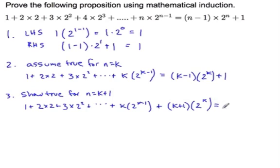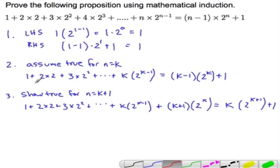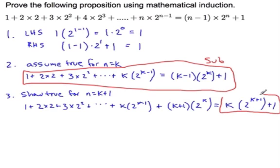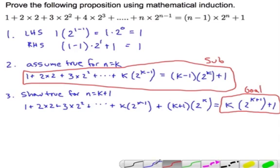And that should be k times 2 to the k plus 1 plus 1. I like to do this extra step just as a reminder: this piece right here will always be your substitution, and this is your goal. You don't touch your goal — you just arrive at your goal.